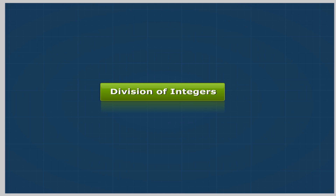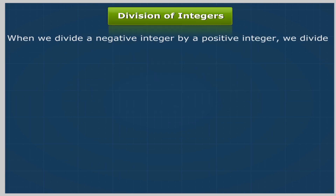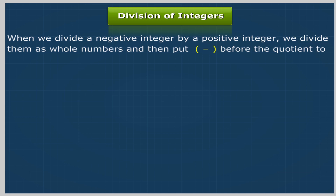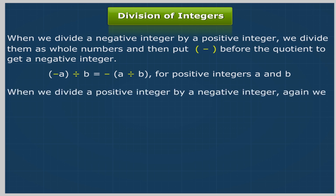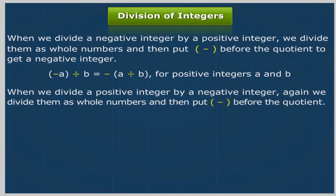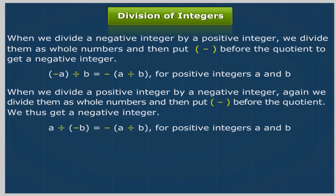Division of integers. When we divide a negative integer by a positive integer, we divide them as whole numbers and then put a minus sign before the quotient to get a negative integer: (−a) ÷ b = −(a ÷ b) for positive integers a and b. When we divide a positive integer by a negative integer, again we divide them as whole numbers and then put a minus sign before the quotient, giving a negative integer: a ÷ (−b) = −(a ÷ b) for positive integers a and b.